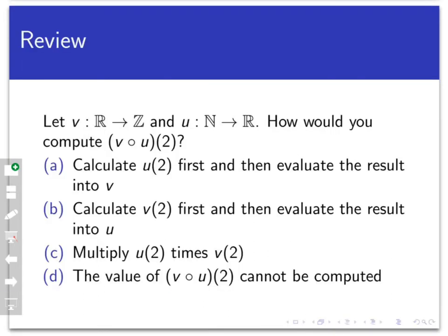So let's suppose I have two functions u and v. v maps the real numbers into the integers, and u maps the natural numbers into the real numbers. Notice that we're not providing the rule for these functions here, that won't matter for the question. If I wanted to calculate v compose u of 2, what would I do? Look at the options, pause the video and vote, and then come back when you are ready.